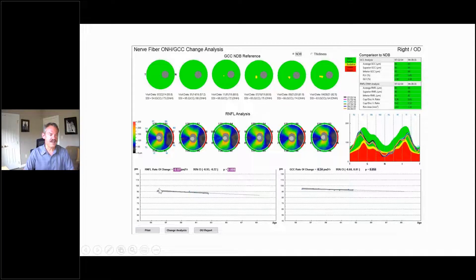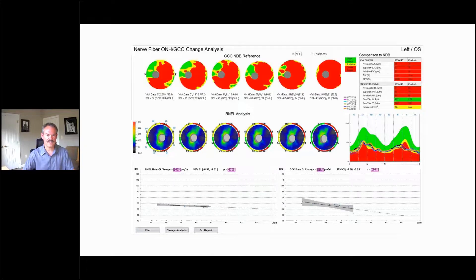The nerve fiber layer is being flagged, but that's fairly stable as well. So the right eye OCT looks pretty good.